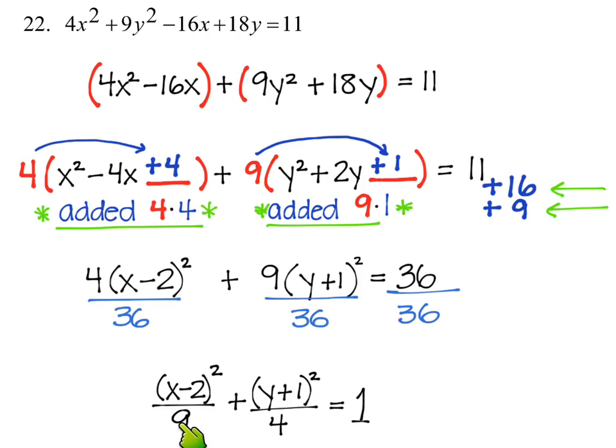Our a is 3, our b is 2, and then the c is the square root of the difference, so it will be the square root of 5. Using the center and those a, b, and c, we can find our 4 vertices and our 2 foci.